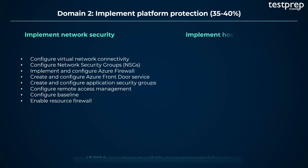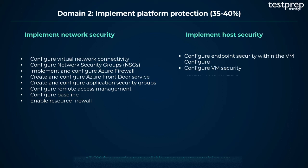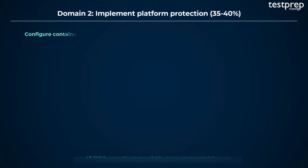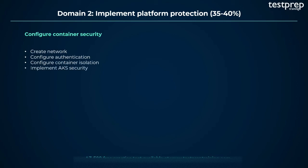Number 2: Implement host security. It contains five subtopics: configure endpoint security within the VM; configure VM security; harden VMs in Azure; configure system updates for VMs in Azure; and create baseline. Number 3: Configure container security. It contains six subtopics: create network; configure authentication; configure container isolation; implement AKS security; configure container registry; and implement vulnerability management.